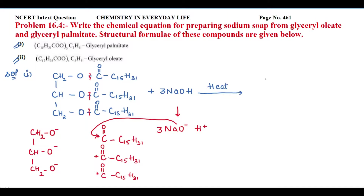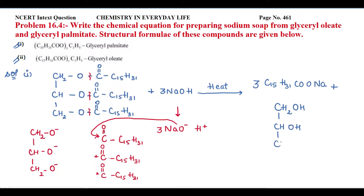The salt formed is C₁₅H₃₁COONa — we get three molecules of C₁₅H₃₁COONa. This is sodium palmitate, which is also known as soap. The H⁺ ions attack the glycerol backbone, giving glycerol: CH₂OH, CHOH, CH₂OH.